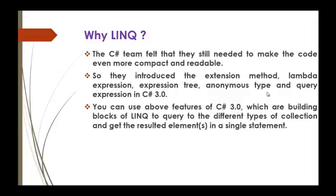Jumping back into the presentation — the C# team or Microsoft felt they needed to make this code even more compact and readable. So in C# 3.0, they introduced the extension method, lambda expression, expression tree, anonymous method, anonymous type, and query expression — that is LINQ in C# 3.0. To overcome the for loop, foreach loop, and delegate approach, they introduced the LINQ concept. These features — extension method, lambda expression, expression tree — are the building blocks for LINQ to query different types of collections and get the result in a single statement.